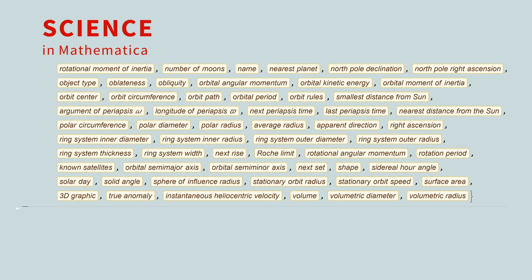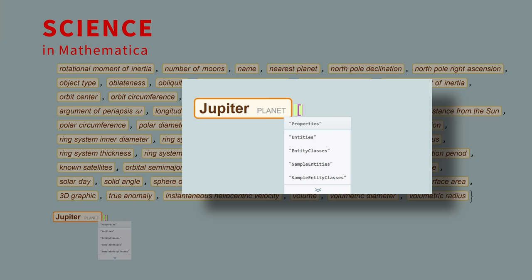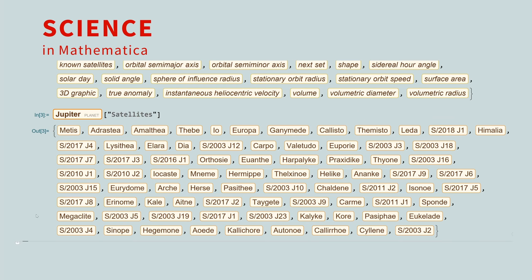For example, let's request the list of all natural satellites around Jupiter. First, we access the Jupiter entity. Next, enter an open bracket to trigger the auto-complete feature to see all of the properties and their names. If we select the satellites property, then we get a list of Jupiter's satellites.